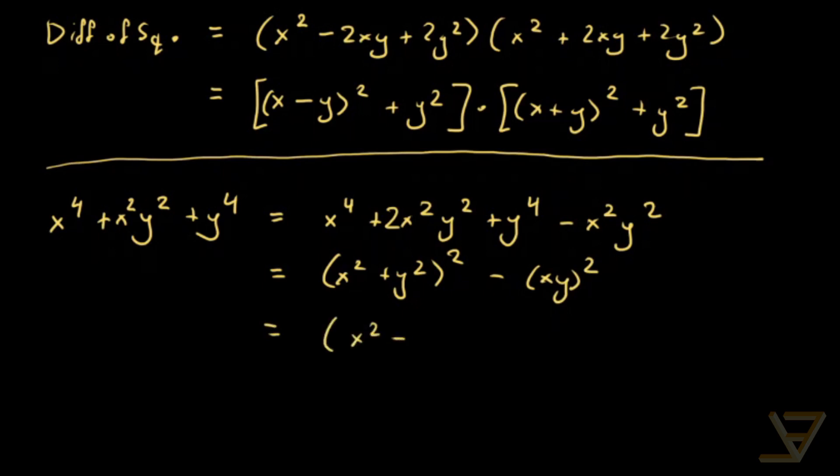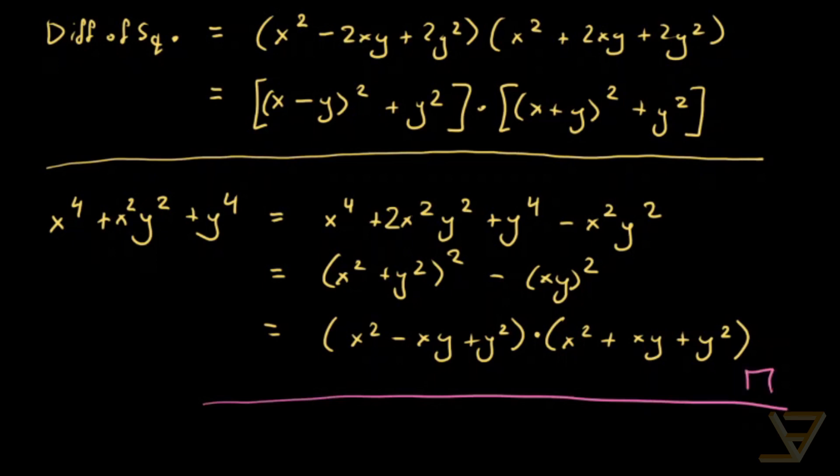And it gives us x squared minus xy plus y squared times x squared plus xy plus y squared. So it's a similar idea. We complete the square by fudging the middle term and then we use difference of squares. Thank you for watching and I'll see you next time.